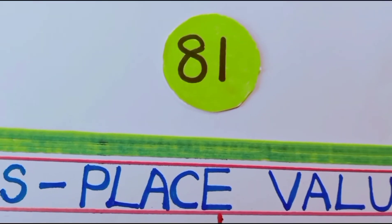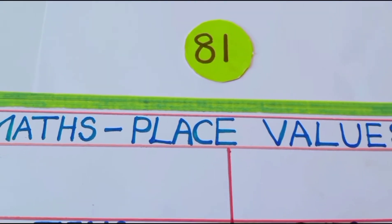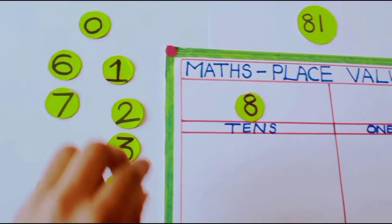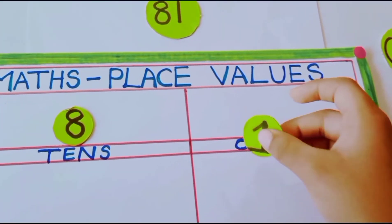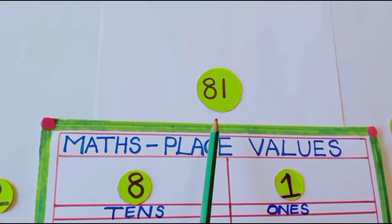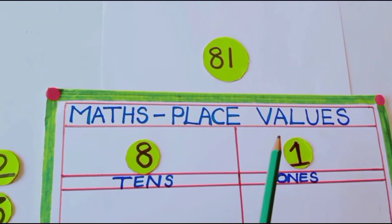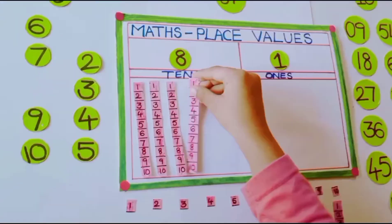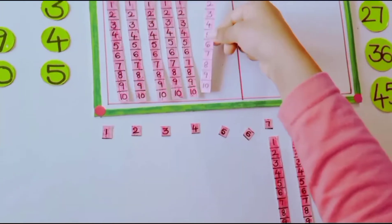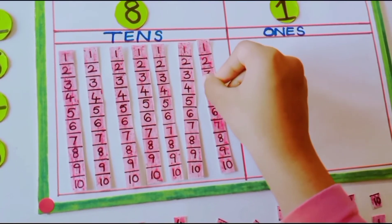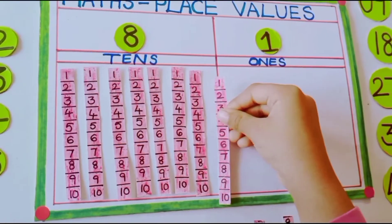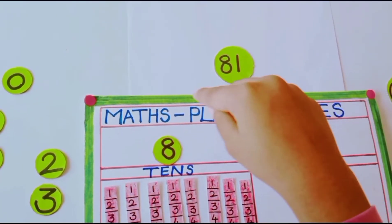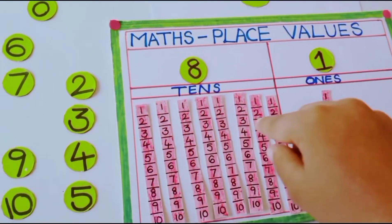Now what is the number here? 81. In 81, how many tens are there? 8 tens. Very good. Then how many ones are there? 1 one. Very good. 81 is 8 tens and 1 one.